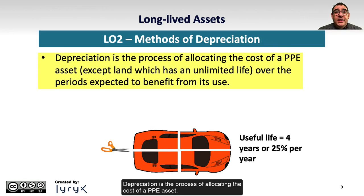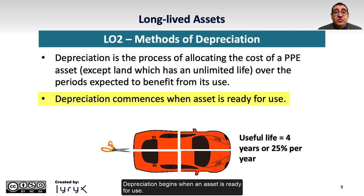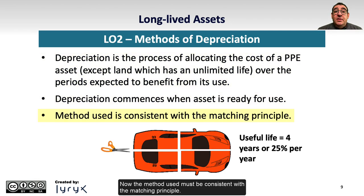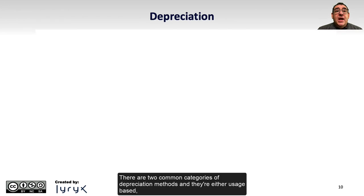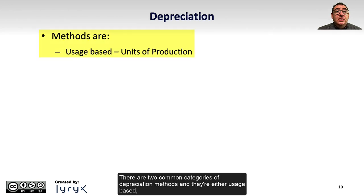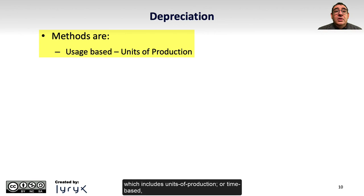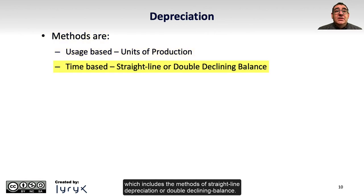Depreciation is the process of allocating the cost of a PPE asset — except for land, which has an unlimited life — over the periods expected to benefit from its use. Depreciation begins when an asset is ready for use. The method used must be consistent with the matching principle. For example, the useful life of a car might be 4 years, or depreciated at a rate of 25% per year. There are two common categories of depreciation methods: usage-based, which includes units of production, and time-based, which includes straight-line depreciation or double declining balance.